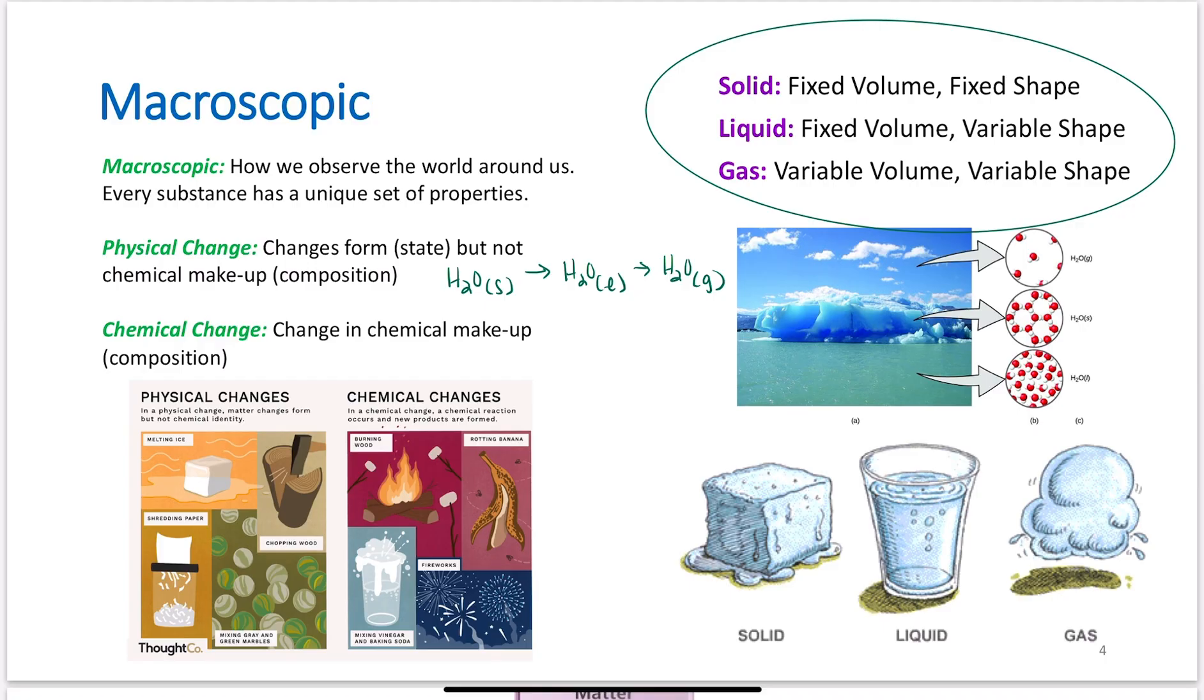If I have water in the solid phase, I have a singular ice cube. Assuming I keep that ice cube cold, it doesn't melt, I don't chip at it, I just leave it be. It's just going to stay a single ice cube. It's going to stay the same shape and the same volume that it's had the whole time. If I let that ice cube melt, let's say I put that ice cube into a glass and I let it melt.